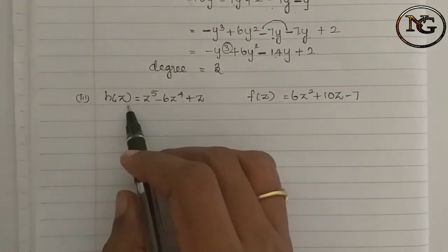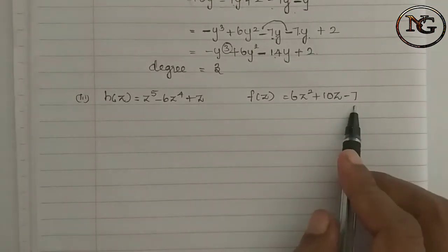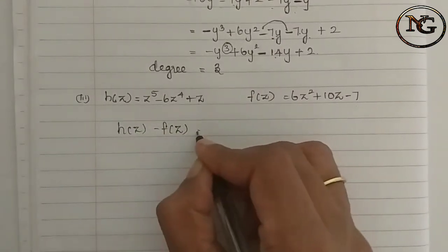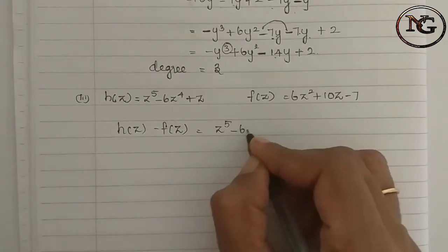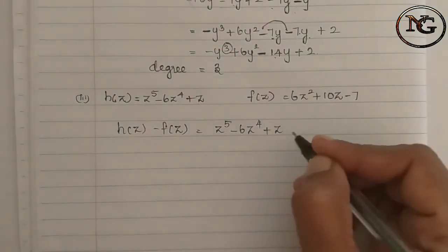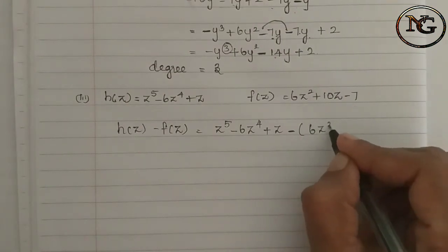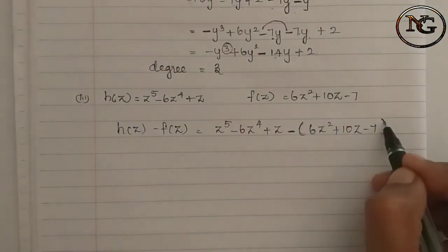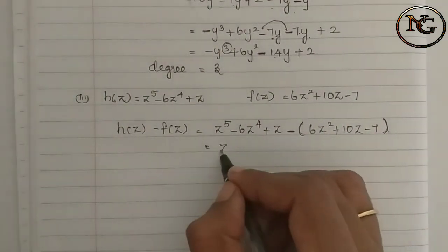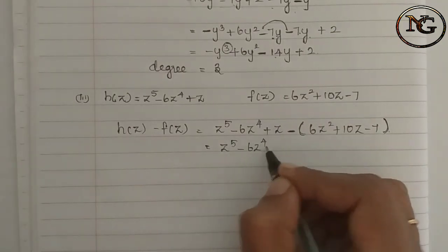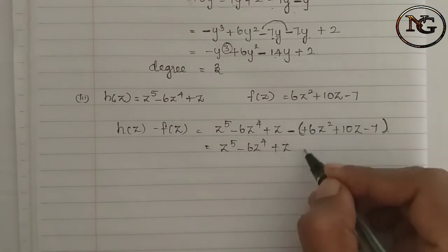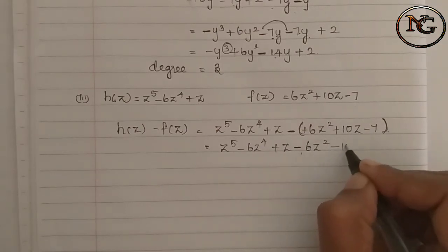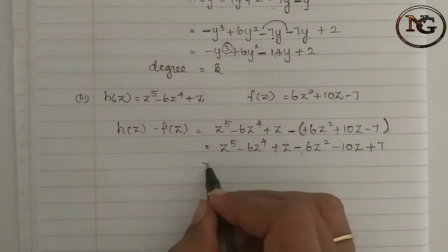Next sum. We call it H of z and F of z. H of z is equal to F of z minus the second expression.